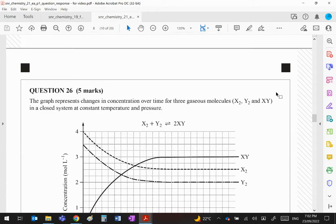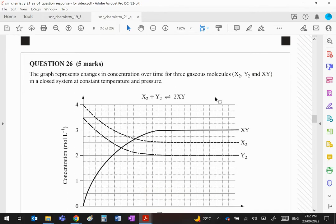The graph represents changes in concentration over time for three gaseous molecules. There's the equation for the reaction. You can see we're starting with these two and we have no XY at the start, so as equilibrium is reached their concentrations will gradually decrease, this one will gradually increase. A point will be reached there where every one of them stays the same, therefore equilibrium is reached at that point there.